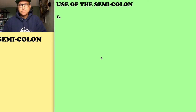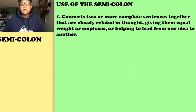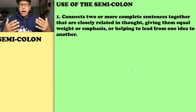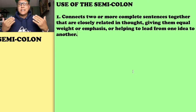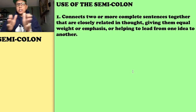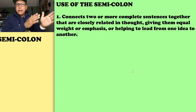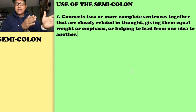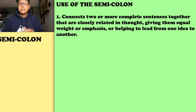Rule number one: a semicolon can connect two or more complete sentences together, especially when they are closely related in thought. You're wanting to give equal weight or emphasis to both ideas, but it can also help logically lead a reader through your thought process. It helps continue the thought because it connects two complete sentences together.